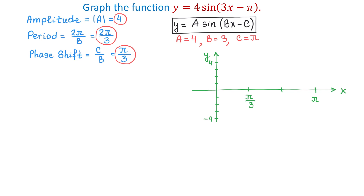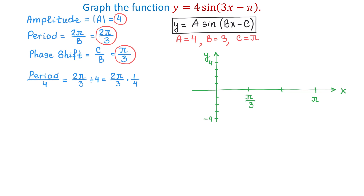To graph this function we will find 5 points: the x-intercepts, the maximum value, and the minimum value. We will start by dividing the period by 4 to find the quarter period. Period over 4 equals 2 pi over 3 divided by 4, which equals 2 pi over 3 multiplied by 1 over 4. Dividing numerator and denominator by 2, the quarter period is pi over 6. This means that if we divide the interval into 4 sub-intervals, each one has a length of pi over 6.